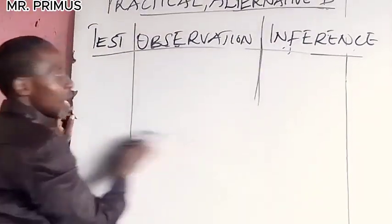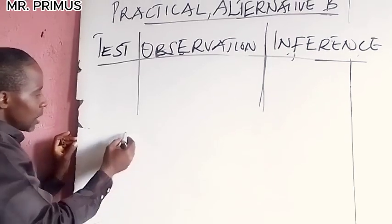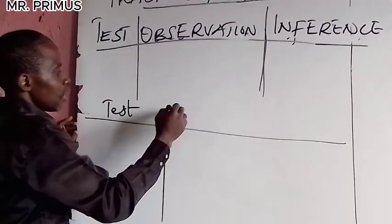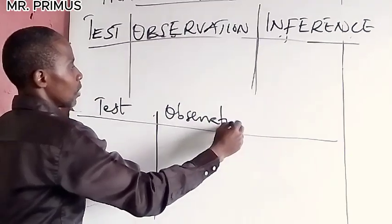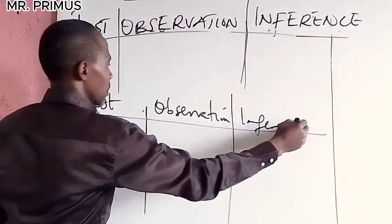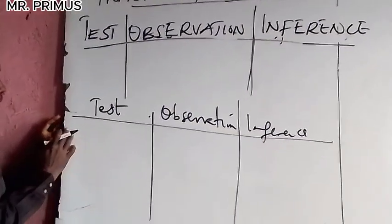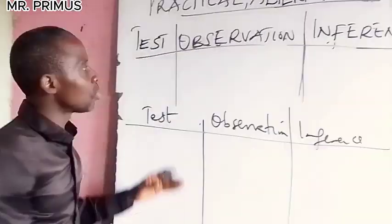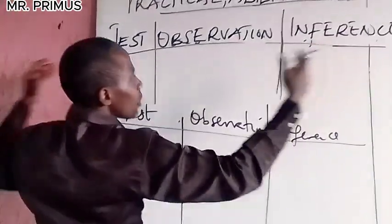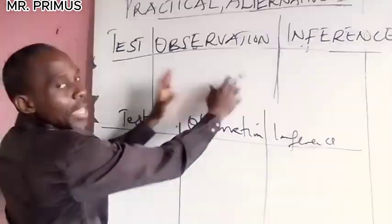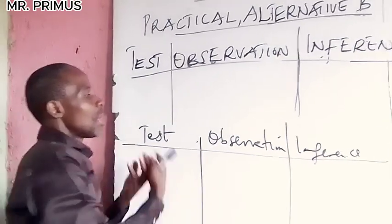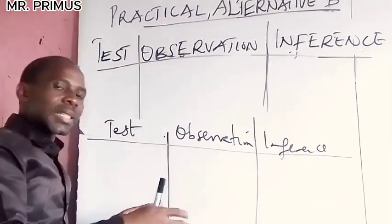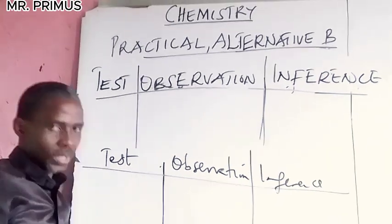Now look at another thing I observed — how many students drew the table. They drew it with TEST, OBSERVATION, INFERENCE all in roughly equal columns. This is wrong — there is no proper planning. The space for test, observation, and inference should not be equal. Under normal circumstances, your test column should be small, and observation should be larger because you will have a lot to write there.